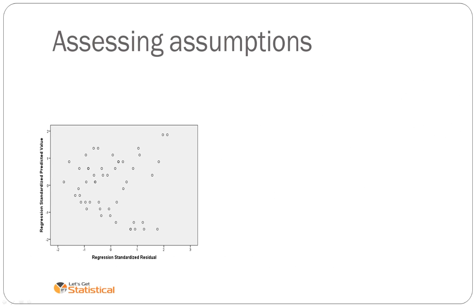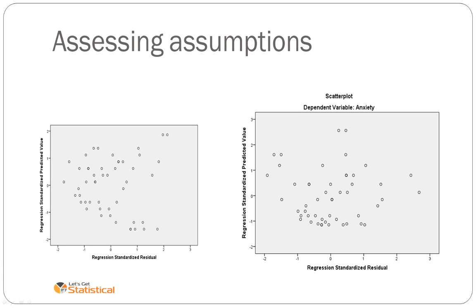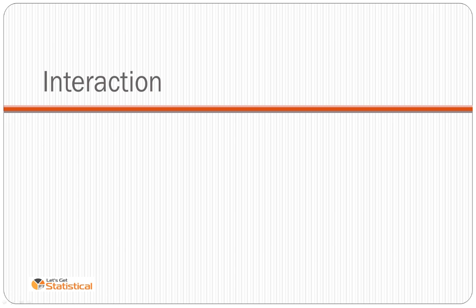Let's go through assessing the assumptions. You can see that on the left there you have the original assumptions, which have got this fanning. On the right you've got less of this going on. So on the right is the quadratic model, which has removed some of this violation of this assumption. On the left was the original linear model, which that line indicates the fanning.